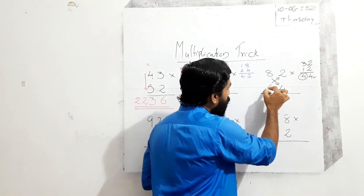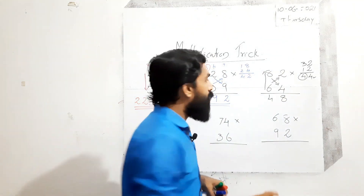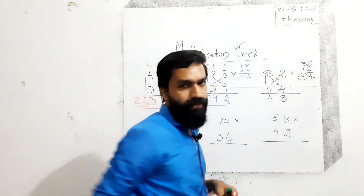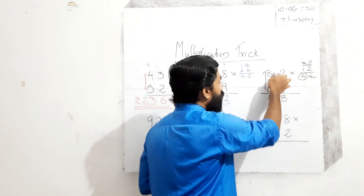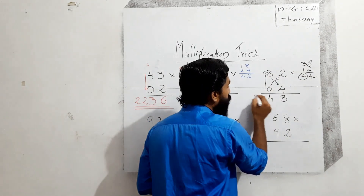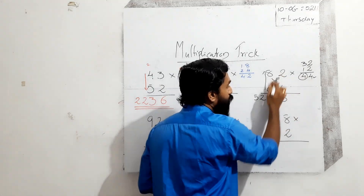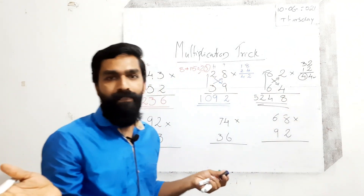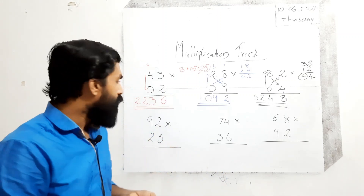Write 4 here and carry 4 to the next step. Multiply the tens places: 8 into 6 is equal to 48. 48 plus carry 4 is equal to 52. Write that here. So the answer is 5248. This is simple — in one step you can write the answer.